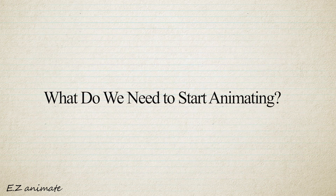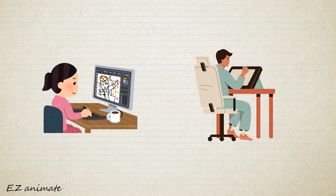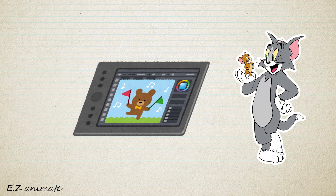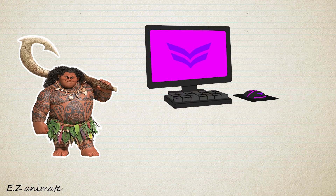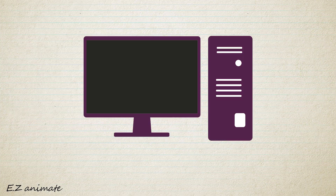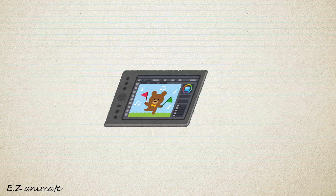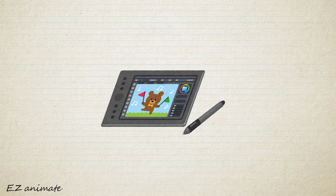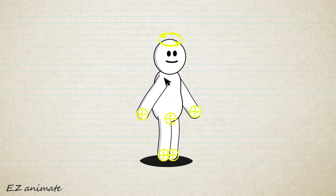What do we need to start animating? There are many types of animation, each requiring different tools. For example, frame-by-frame animation might require a drawing tablet in addition to a computer. 3D animation often needs a powerful PC or laptop with high-performance GPUs. The method I'm going to show you only requires a computer or laptop capable of handling standard tasks. You won't need a tablet since we are not focusing on hand-drawn animation, nor a high-end GPU since we are not doing 3D animation. Instead, we will focus on rigging-based 2D animation.